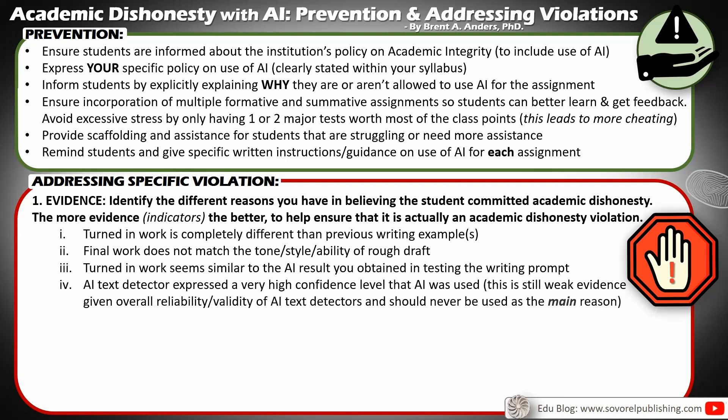Finally, an AI text detector expressing a very high confidence level that AI was used can be an indicator. However, I want to be crystal clear that an AI text detector provides weak evidence — it gives an estimate, and the overall reliability of all text detectors, including Turnitin, still isn't that great and the validity isn't that great. In fact, a recent research study done by Stanford found that if the assignment is written by someone who has English as a second or alternative language, they're more likely to come up as a false positive on AI text detectors, because their writing is more structured. An AI text detector result should never be used as the main reason to proceed.